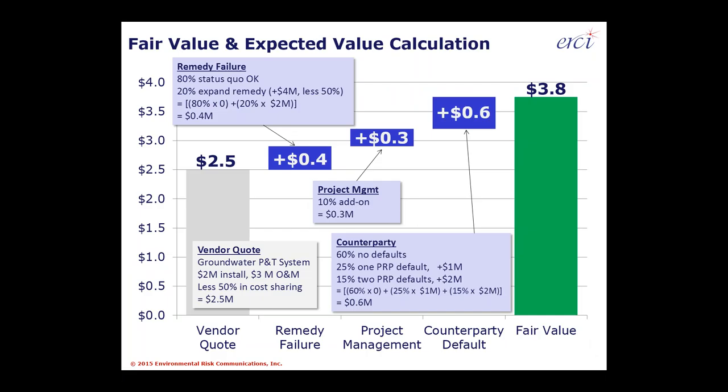In terms of fair value and expected value, an important process is to step back from third-party or vendor quote costs and factor in the key issues to get to fair value. Our rules of thumb are: look at remedy failure, project management, and counterparty default to get from third-party costs to fair value. In due diligence you're working toward the fair value measurement — creating a brand new fair value for a site-specific or portfolio-wide environmental liability. What you may only be given is the vendor quote without allowances for remedy failure, project management, and counterparty risk.